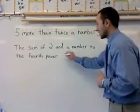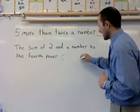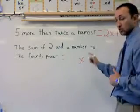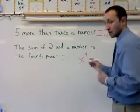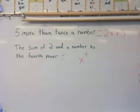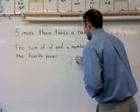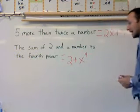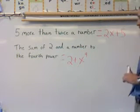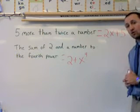That part's already been taken care of. Now it says the sum of two and a number to the fourth power. So two, and since it's the sum, I do addition. It ends up being two plus x to the fourth power.